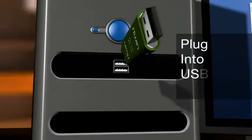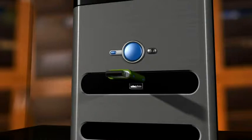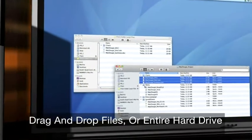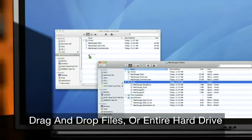Plug iTwin into a USB port on your Mac or PC. Simply drag and drop the files you need, even your entire hard drive, into your iTwin folder.